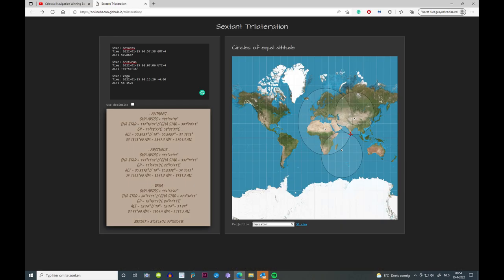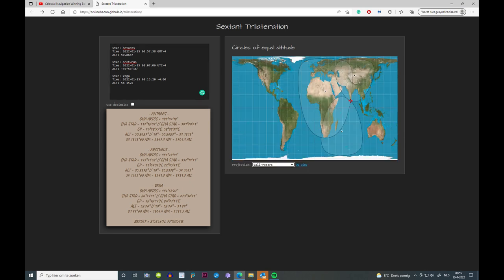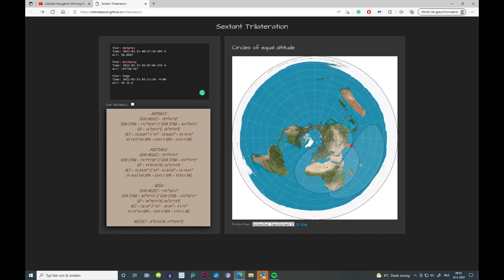the equirectangular projection, the Gall-Peters projection, or even the AE projection, the map of choice of most flat earthers, the circles must be distorted in order to give the right outcome.